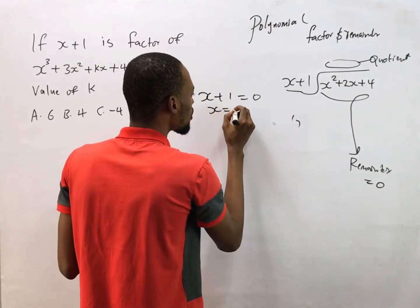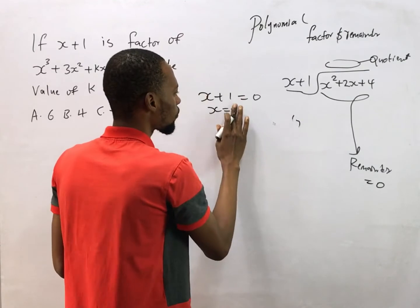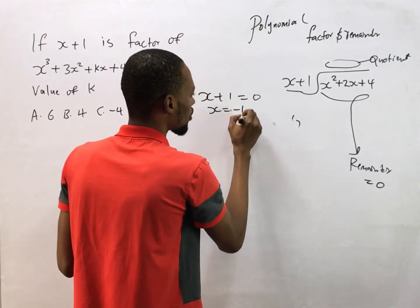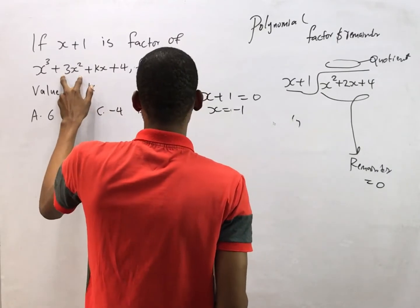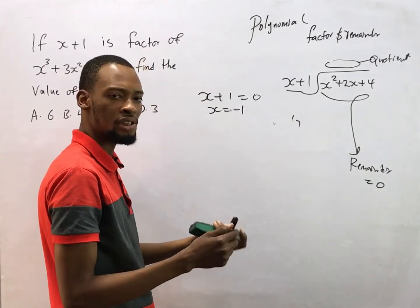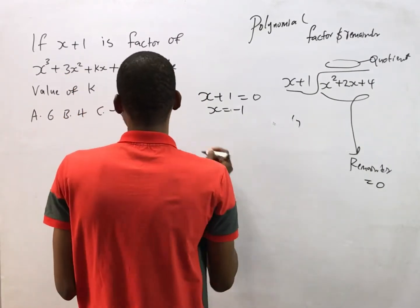it means x is minus one. Substituting x as minus one into this polynomial, our answer should be zero. So we come here and say that